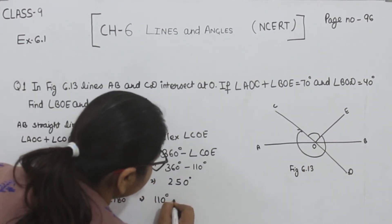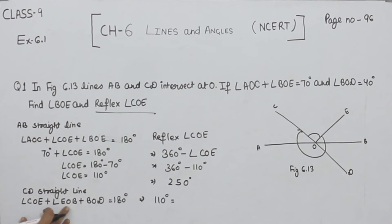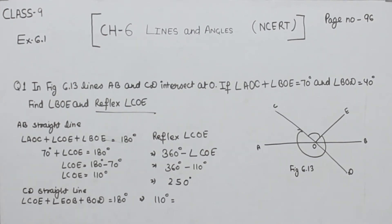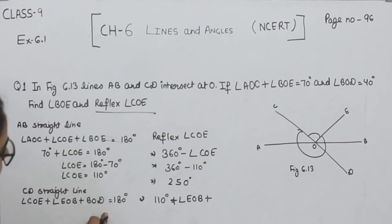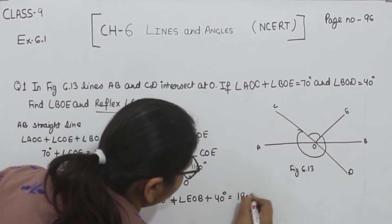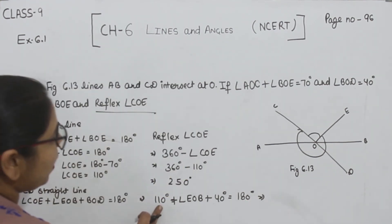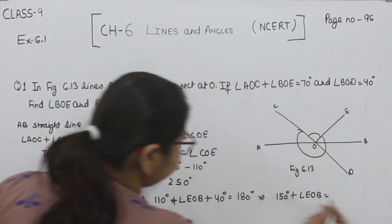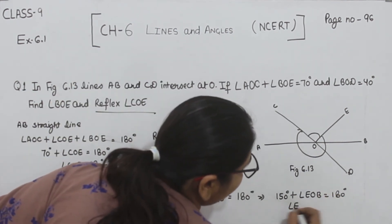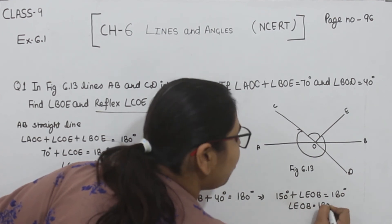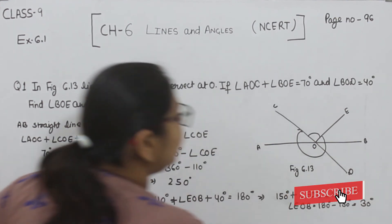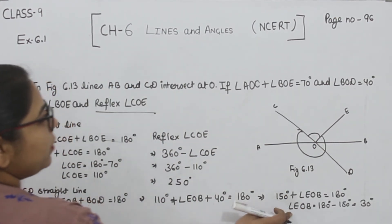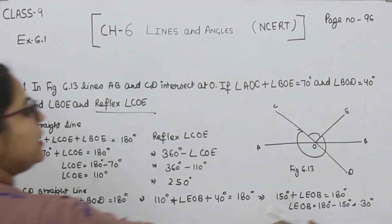We have angle COE as 110°. Angle BOE is unknown. Angle BOD is 40°. So we put: 110 plus angle EOB plus 40 is equal to 180°. That gives us 150 plus angle EOB equals 180°. Therefore, angle EOB equals 180 minus 150, which is 30°. So angle BOE is 30°.